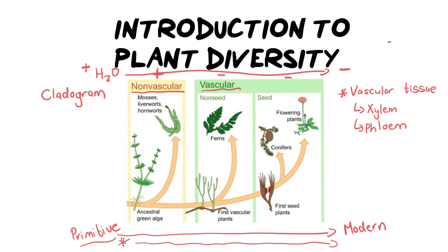Why is vascular tissue important? This is often asked in exams. Vascular tissue transports water and food. The important part about transporting water is that you can live in drier areas. Non-vascular plants like moss must live in a wet area with lots of moisture. But if you have vascular tissue, you can suck up water from the soil and live in a drier place. That's what influences plant evolution.